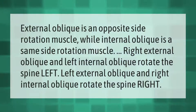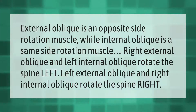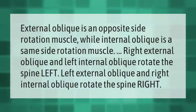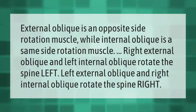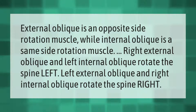The external oblique is an opposite-side rotation muscle, while the internal oblique is a same-side rotation muscle. The right external oblique and left internal oblique rotate the spine left. The left external oblique and right internal oblique rotate the spine right.